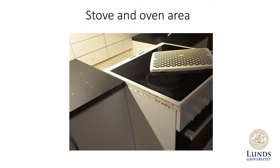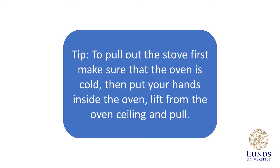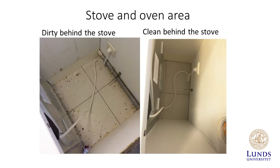This is what the sides of the stove can look like. Food and dirt often get stuck in between the outside of the stove and the surrounding walls. To pull out the stove, first make sure that the oven is cold, then put your hands inside the oven, lift from the oven ceiling, and then pull. To the left you can see a dirty area behind the stove; to the right you can see the same area but clean. Both the floor and walls should be cleaned behind the stove.